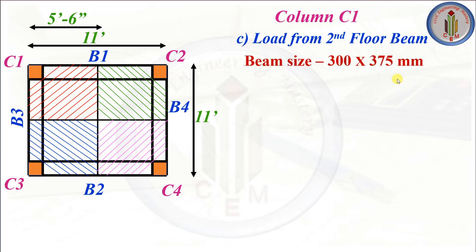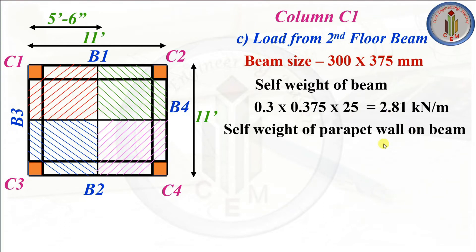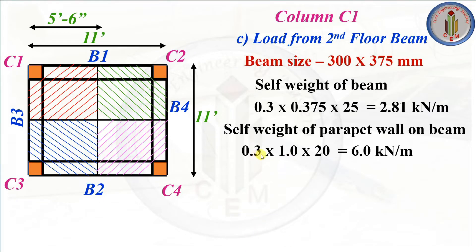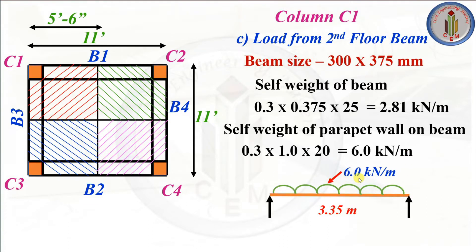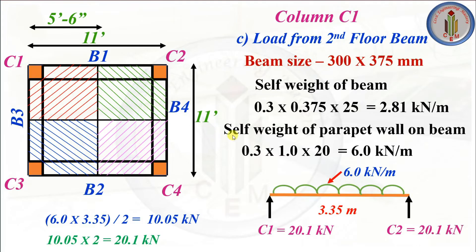Next, let's calculate the load from the second floor beam. Beam size is 300 × 375 mm. The self-weight of the beam is 0.3 × 0.375 × unit weight of RCC. Here, there is no full wall — only a parapet wall of 1 m height at 0.3 m width, multiplied by unit weight of brick. This gives 6 kN/m. Using WL/2 for B1 gives 10.05 kN, and multiplying by 2 for B3 gives 20.1 kN total from the second floor beam for column C1.